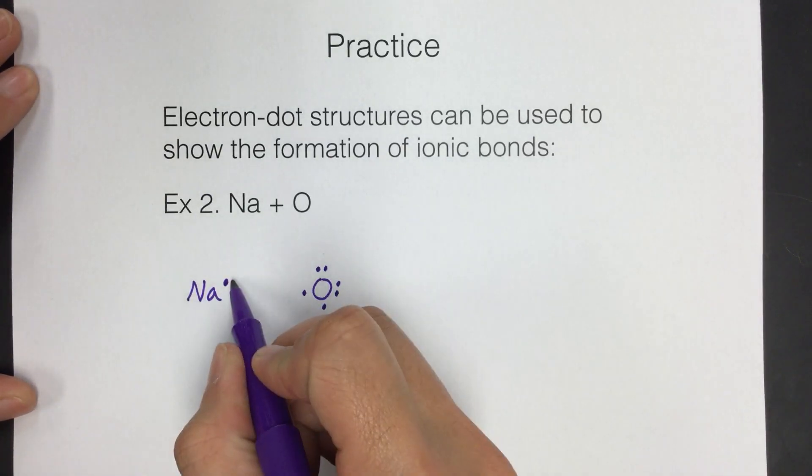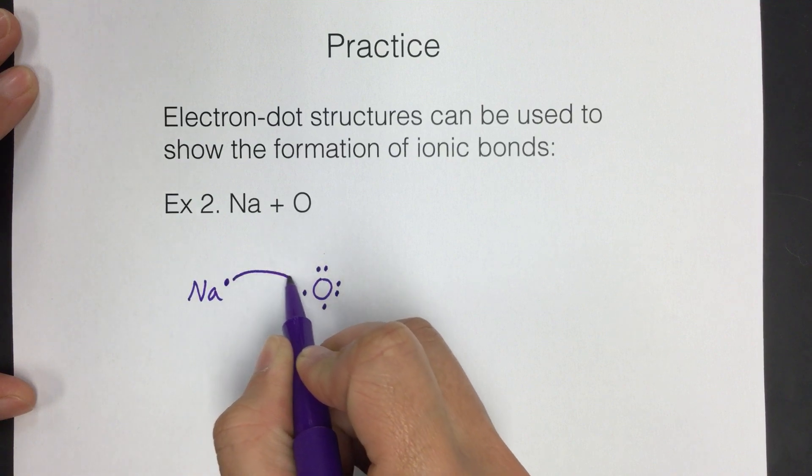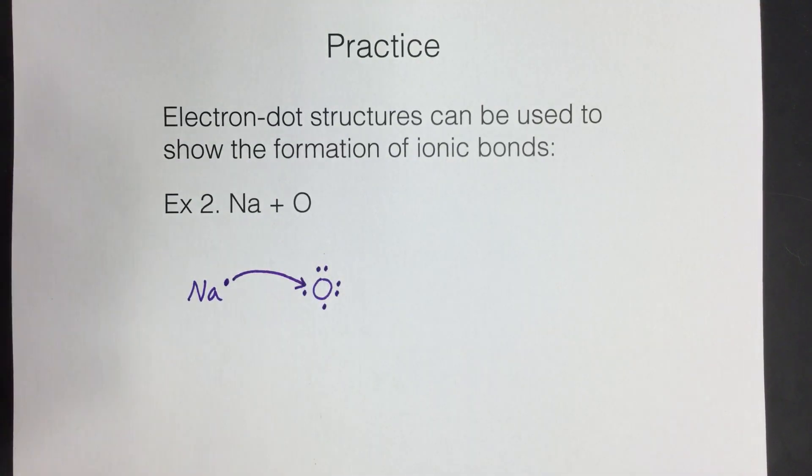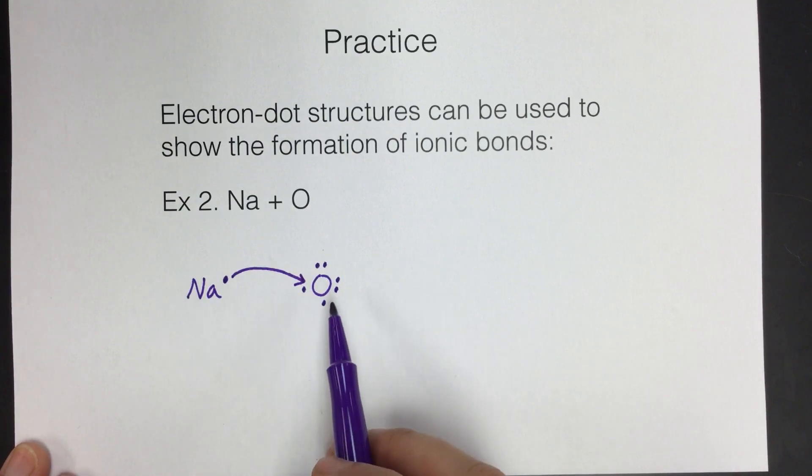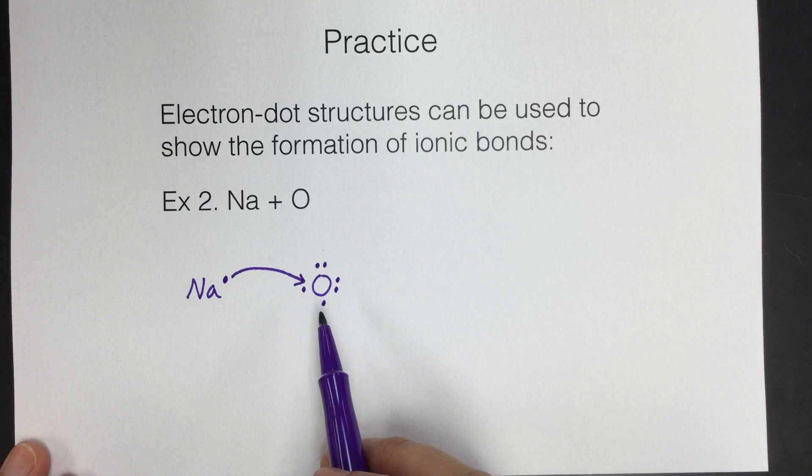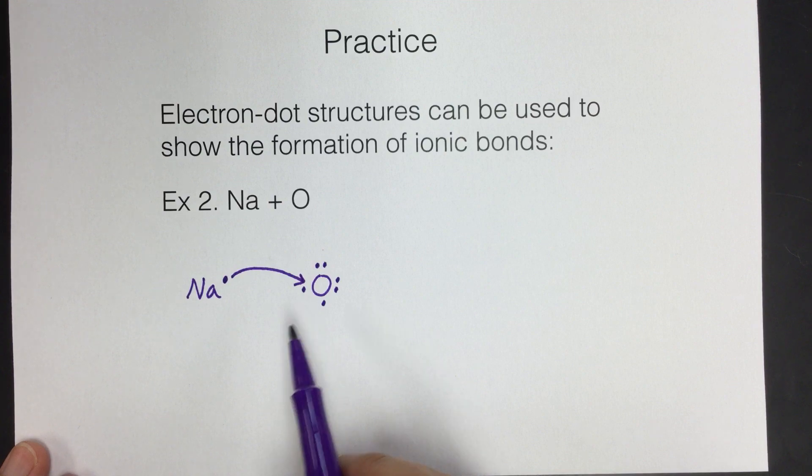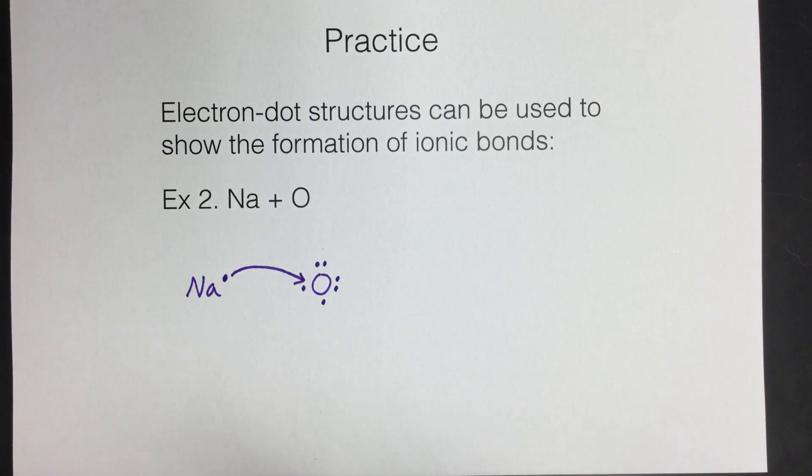So we can make sodium happy. Remember, the arrow needs to start and end very clearly, and it needs to be a curved arrow. So that electron can go there. Now sodium's happy. Is our oxygen happy? Not yet. It wanted two electrons. It's only gotten one.